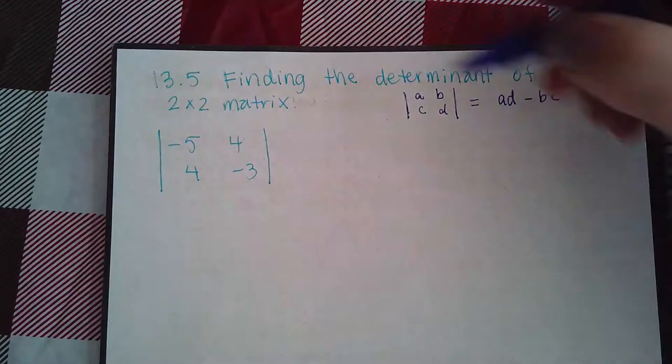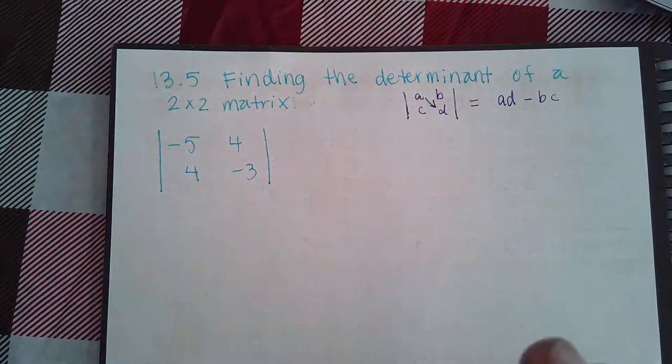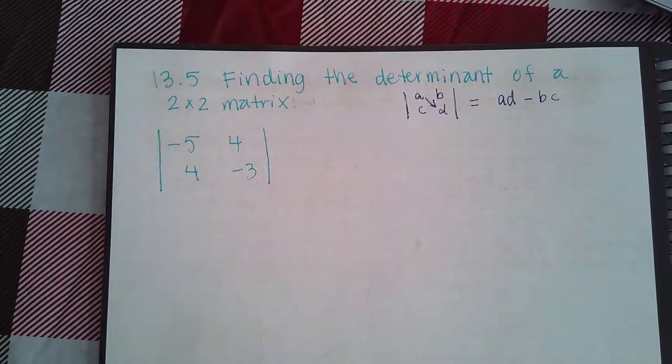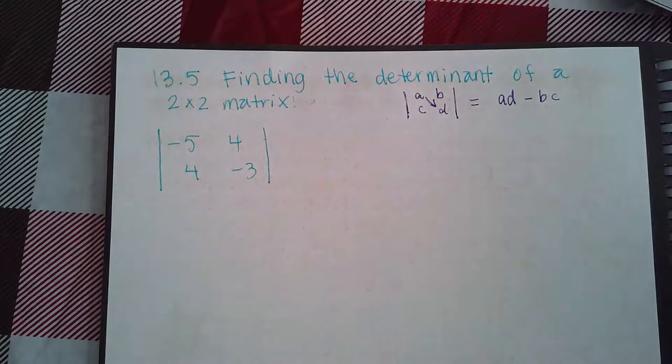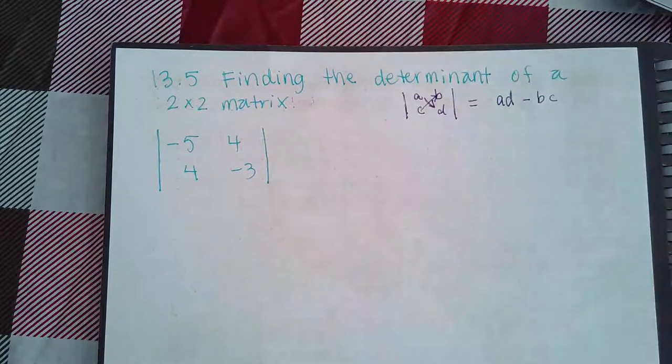And so what are they doing there? They're going downward, right, across. They're multiplying those two diagonal elements together. And then they're going this way and multiplying the other elements together.